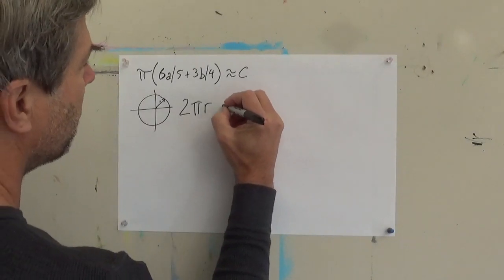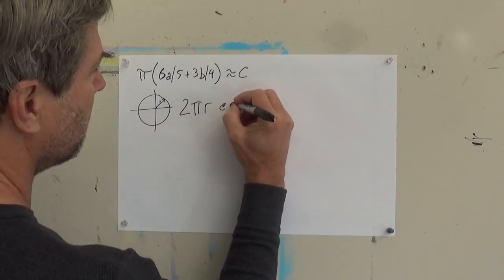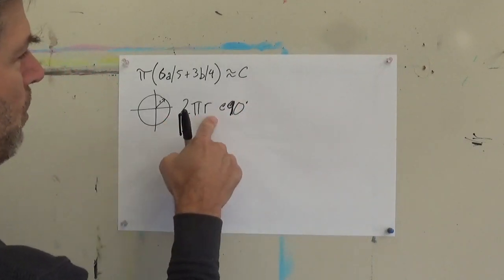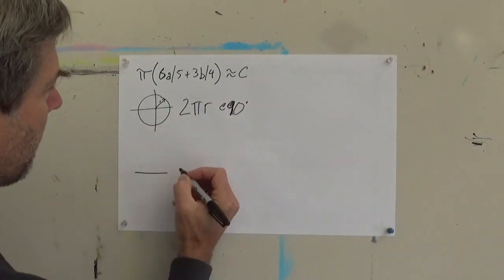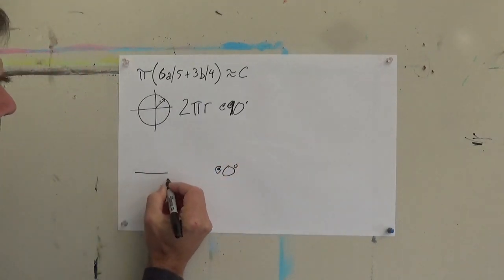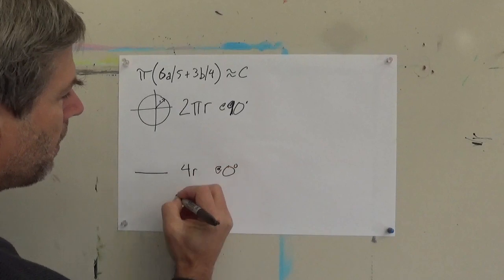So at 90 degrees, we have 2 pi r, but at 0 degrees, this perimeter is 4 r.